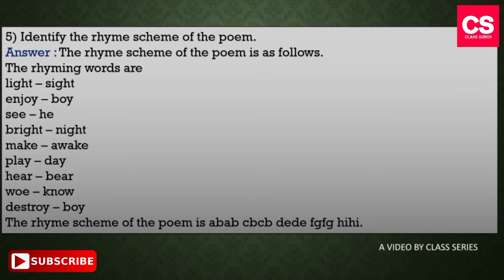Our fifth question is: Identify the rhyme scheme of the poem The Blind Boy. The answer is: the rhyme scheme of the poem is as follows. The rhyming words are: light-sight, enjoy-boy, see-he, bright-night, make-awake, play-day, hear-bear, woe-know, destroy-boy.